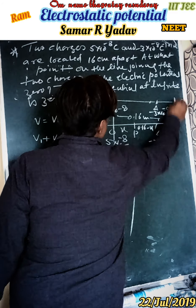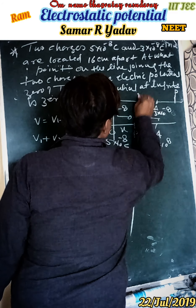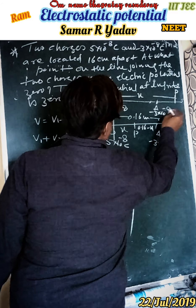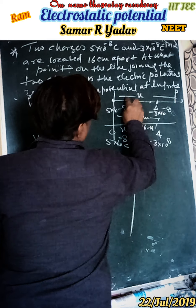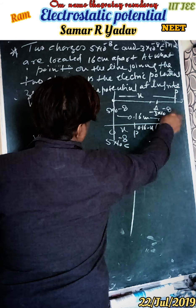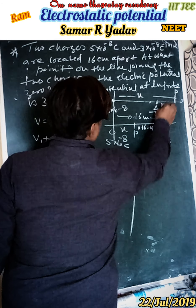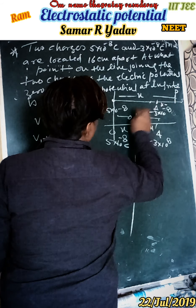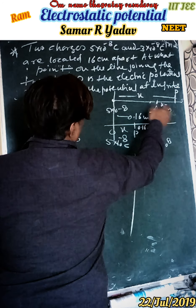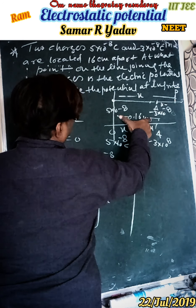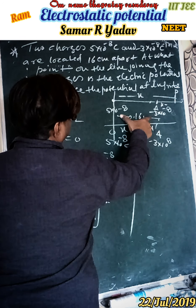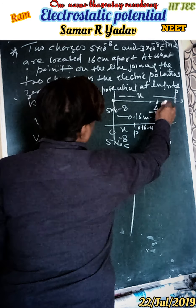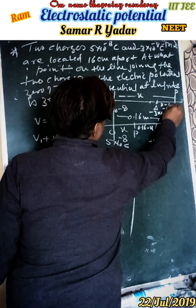Suppose point P is located here, so this distance is x. The charge 5 times 10 to the power minus 8 is at the origin, and minus 3 times 10 to the power minus 8 is at point A. So the distance from the origin to P is x, and the distance from P to A is x minus 0.16.